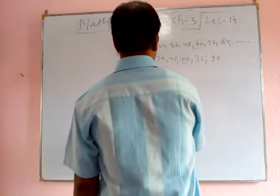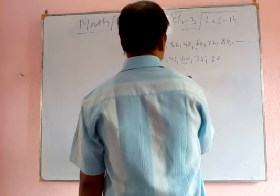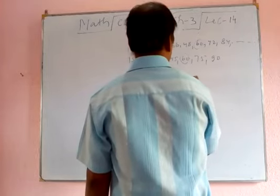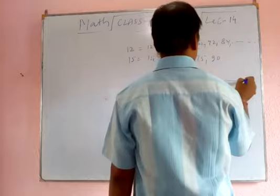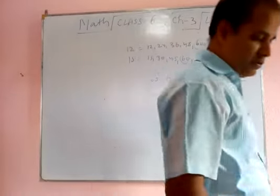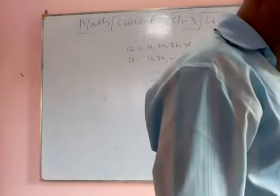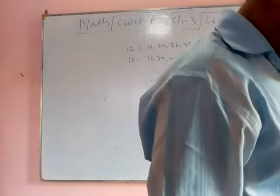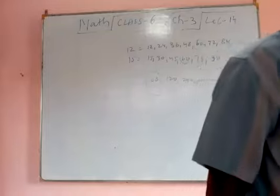So you can add here 60, 120 and 240, and so on. So the least multiple is 60. So it is 60. Example number 32.